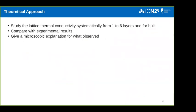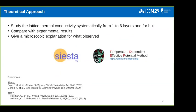From the theoretical approach, we use the density functional theory and the Boltzmann transport equation in order to derive the lattice thermal conductivity systematically from one to up to six layers, never done before, and also for the bulk. And also, we compared our findings with the experimental ones, and try to understand at a nanoscopic point of view what we observe and why we observe what we observe.